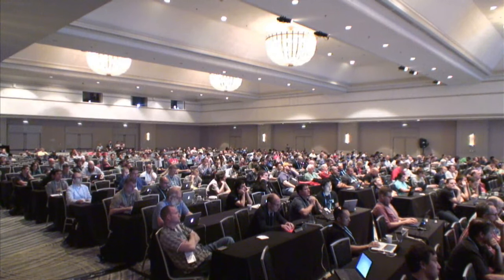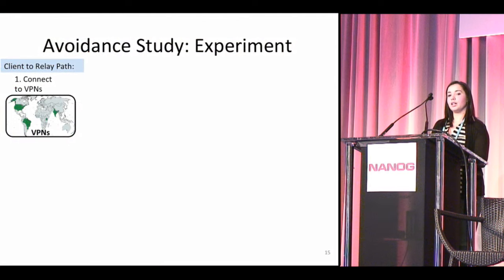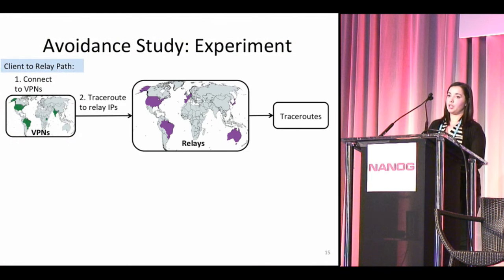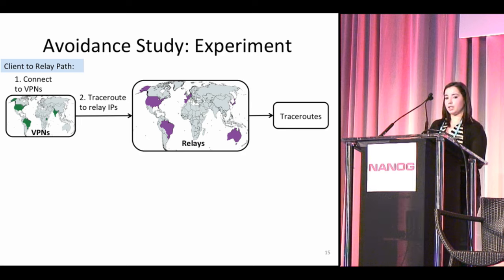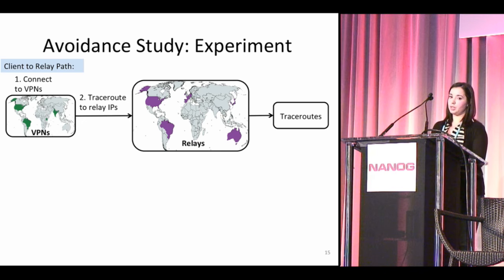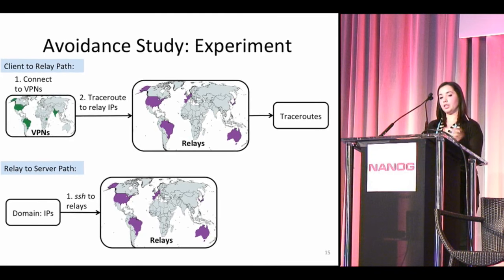With this country avoidance metric defined, we needed the paths to study. We needed paths from clients in the five countries to our set of relays, and country-level paths from those relays to popular destinations. To measure client-to-relay paths, we connected to the VPNs from our first study and tracerouted to relay IP addresses. We set up 12 relays spanning 10 different countries — the US, Brazil, Ireland, France, Germany, Spain, Australia, Singapore, Korea, and Japan. This resulted in traceroutes from client to relay, which we cleaned up and mapped to countries.